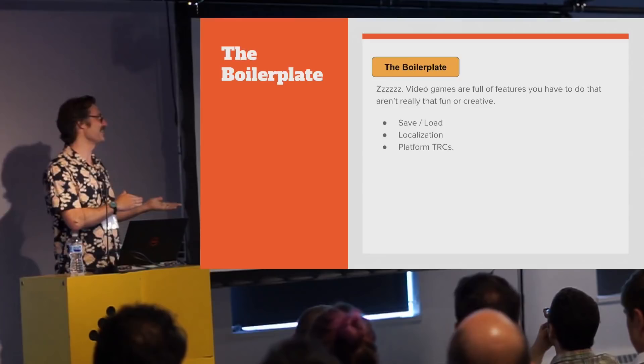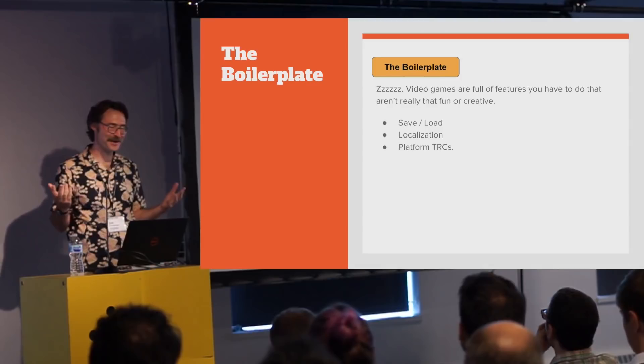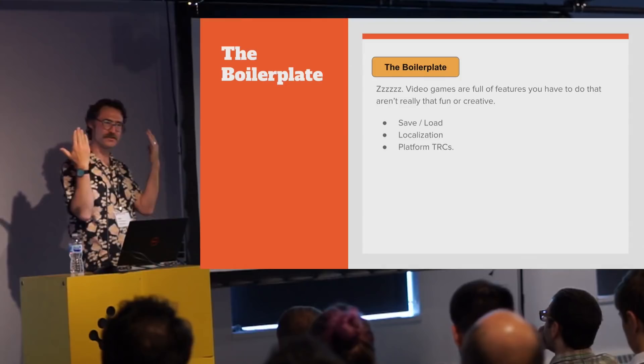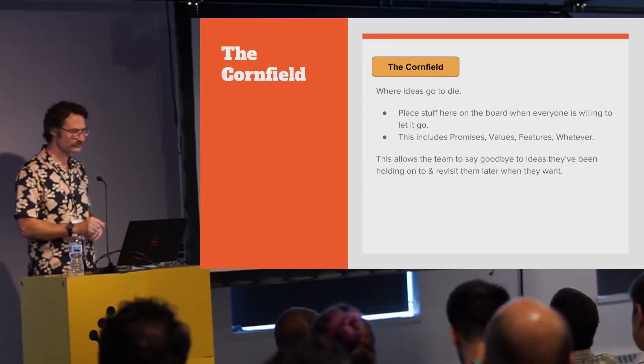But it is super important to have a place where ideas go when people aren't quite willing to let go of them — there's something cool about it and you still want to keep talking about it but it's not in the plan yet. You can put it in the wishlist, and it kind of serves as an idea hospice. Boilerplate is pretty easy — video games are full of annoying features we have to do to ship that we're not really excited about, like UI, save/load, localization, or platform TRCs. I just corral them into one tiny corner of the board.